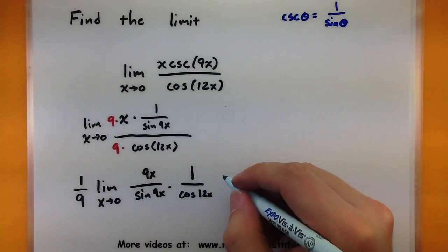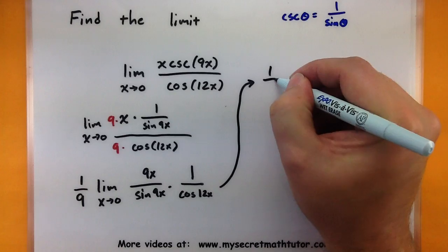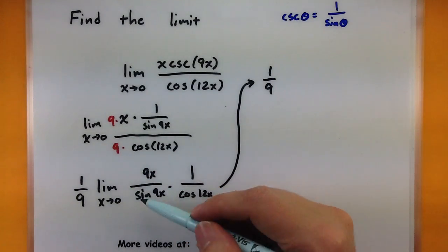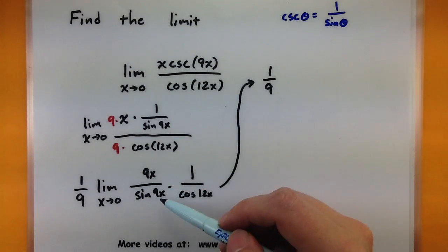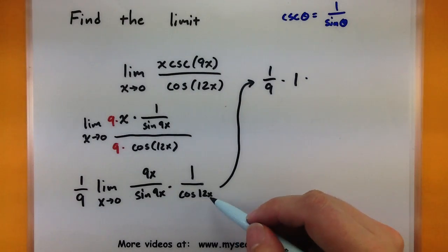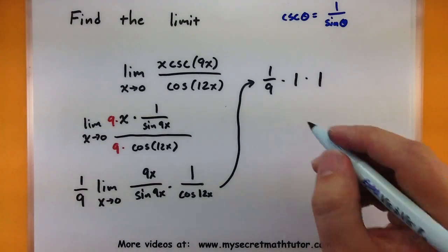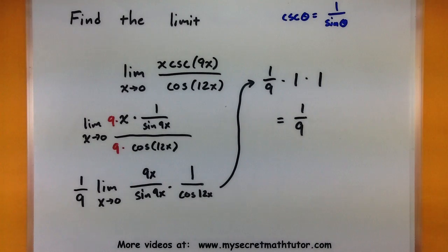Now again, let's go ahead and move through this and compute those limits. So this 1 ninth is still sitting out front, just as it is. This fits what we need. We have the argument as the same as the other side, and x is approaching 0. So that is just 1. And then as x approaches 0 for our cosine, that's 1 over 1 or 1. So all of this reduces to simply 1 ninth. And then that limit is done.